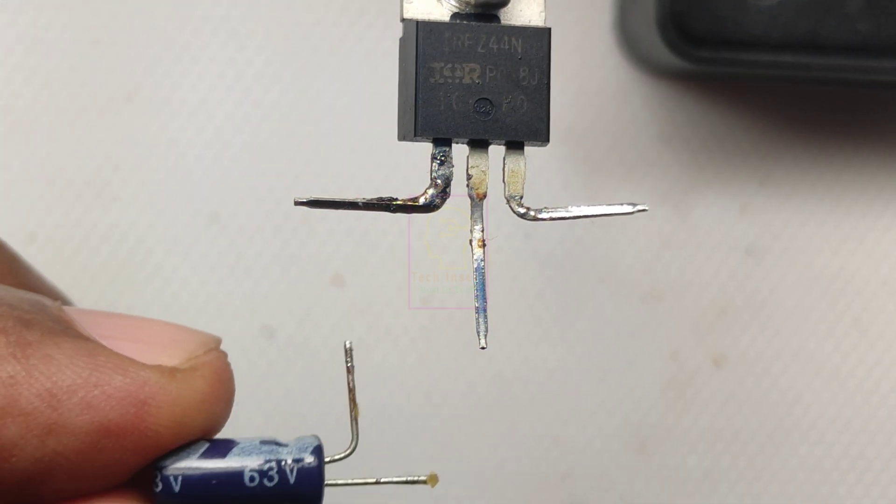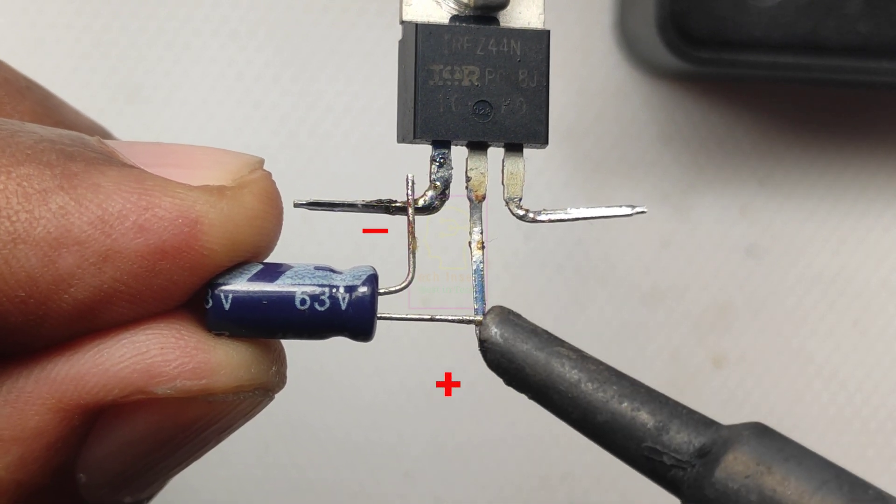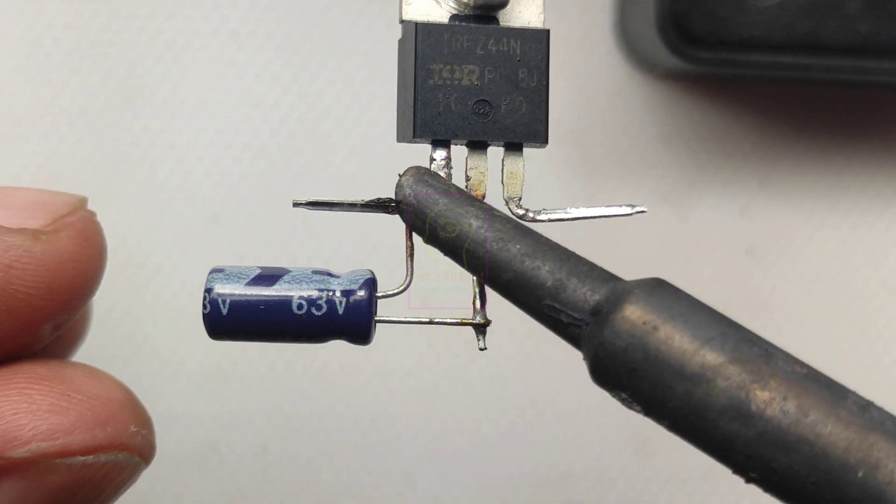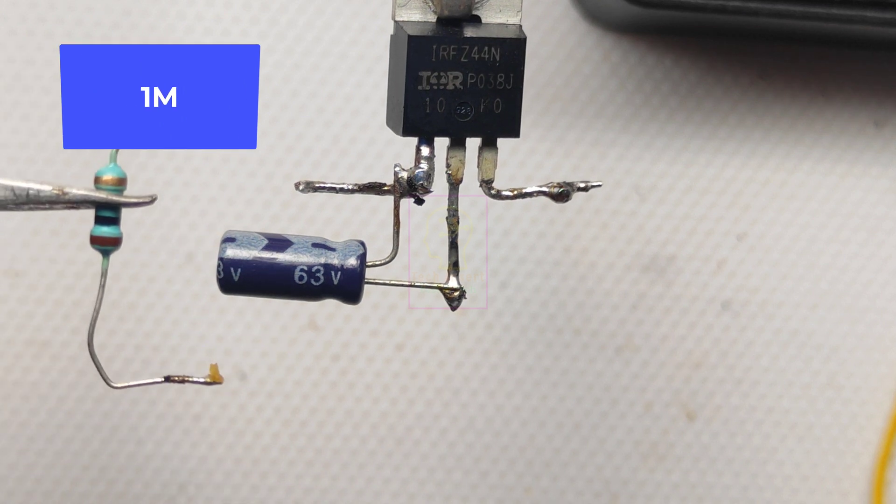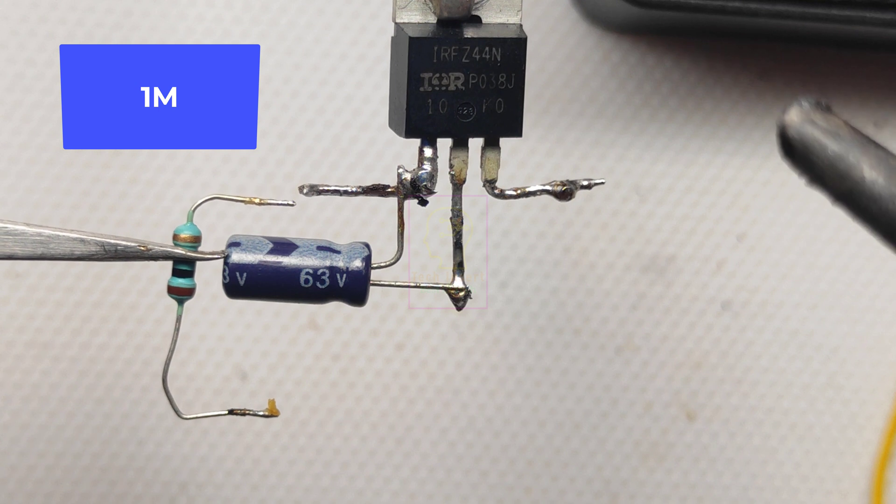The circuit is wired around n-channel MOSFET IRFC 44n which has the capability of handling 19 ampere. The circuit will work on 9 volt to 24 volt perfectly. I didn't test this with more than 24 volt.